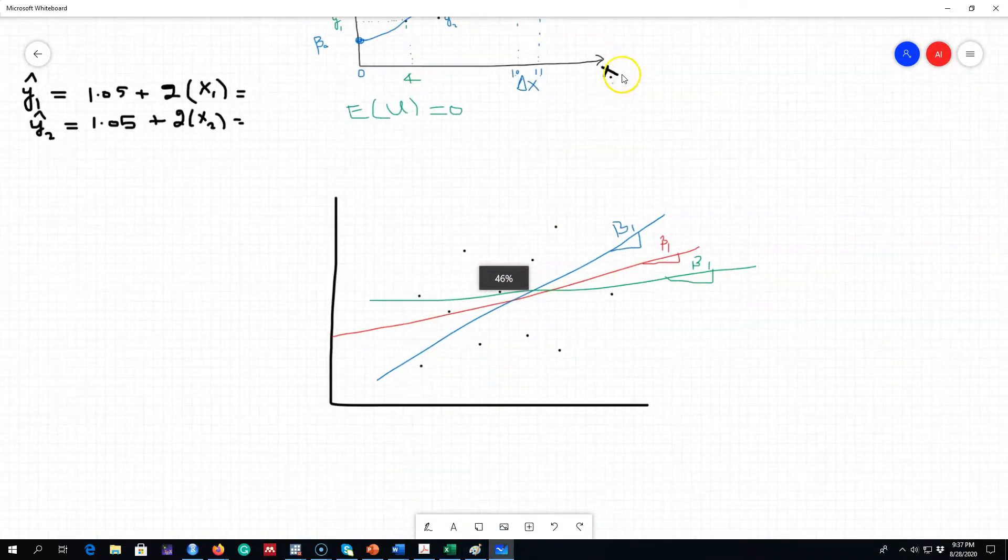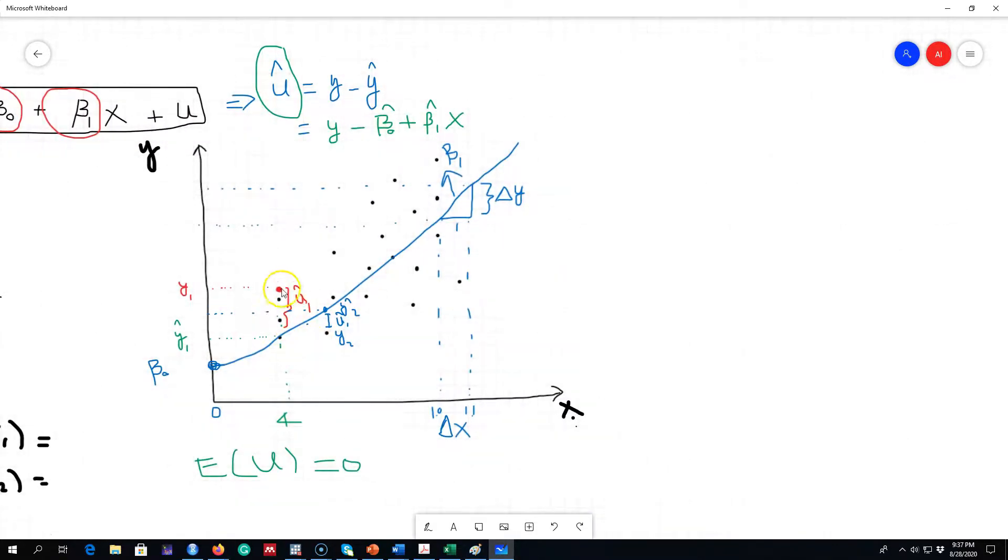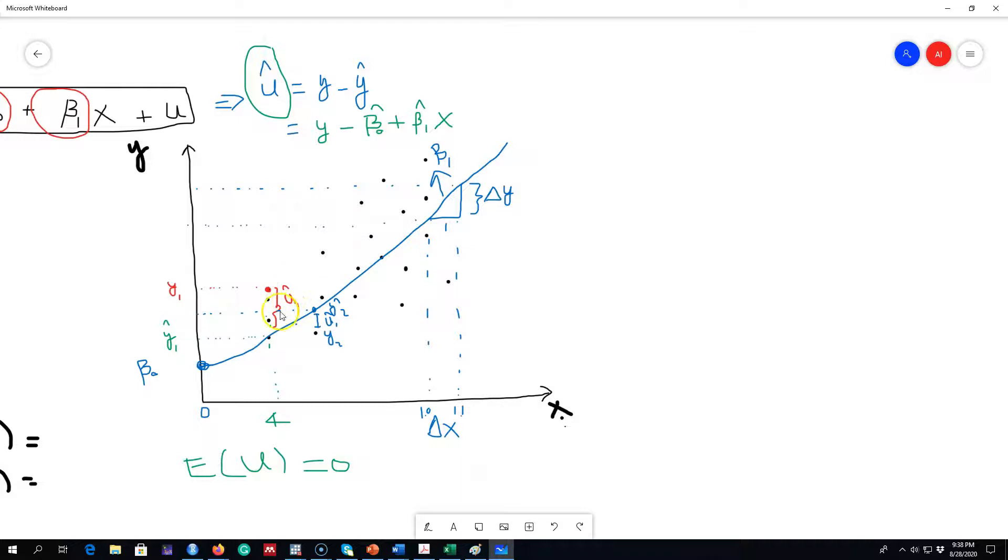Again, we're going to look at the previous graph here that we drew and see when we were predicting the value of Y1, we under predicted the value. The actual value was much larger than our predicted value. So essentially what we want to do is we want to predict a value as close to the actual value as possible.